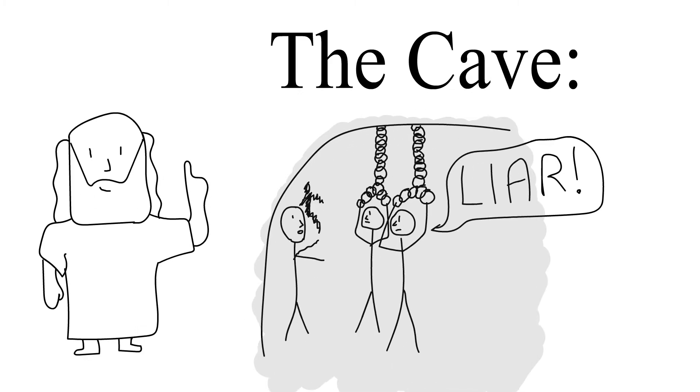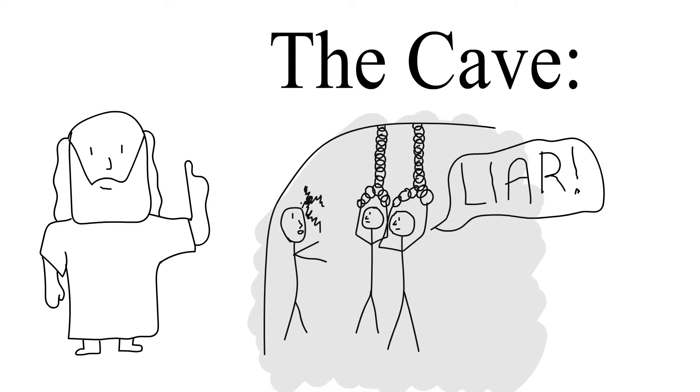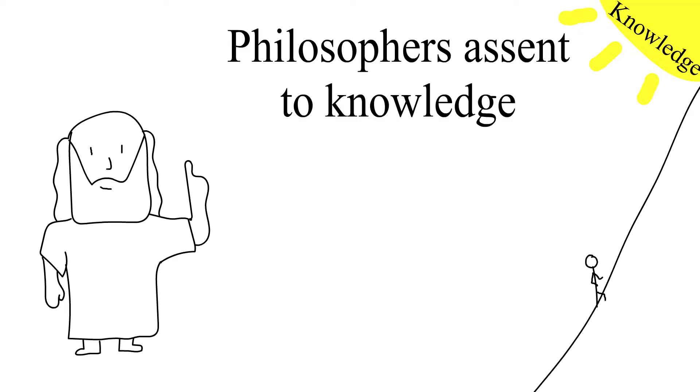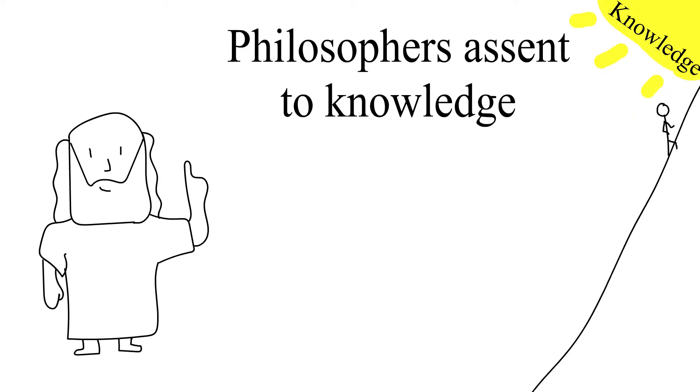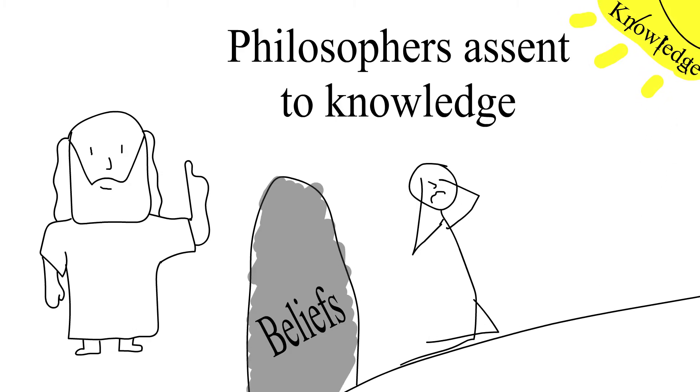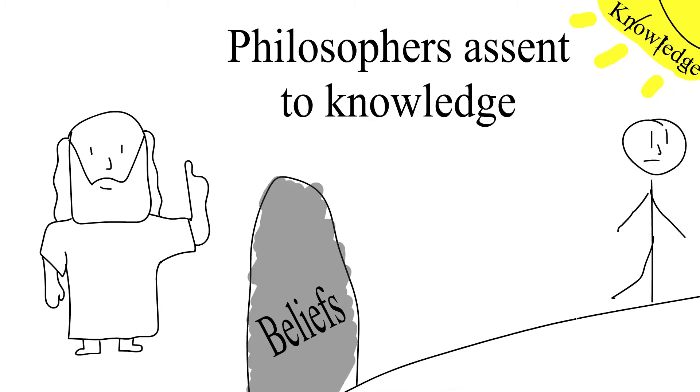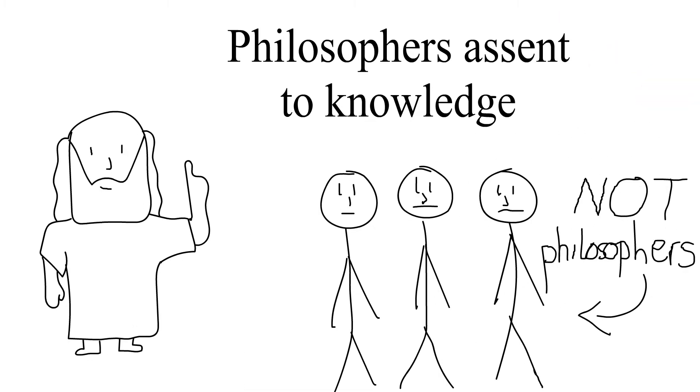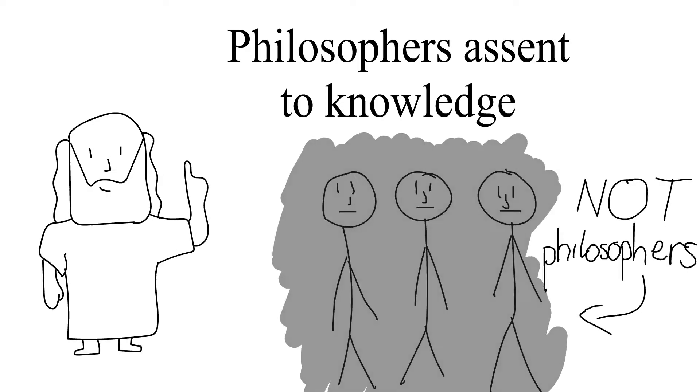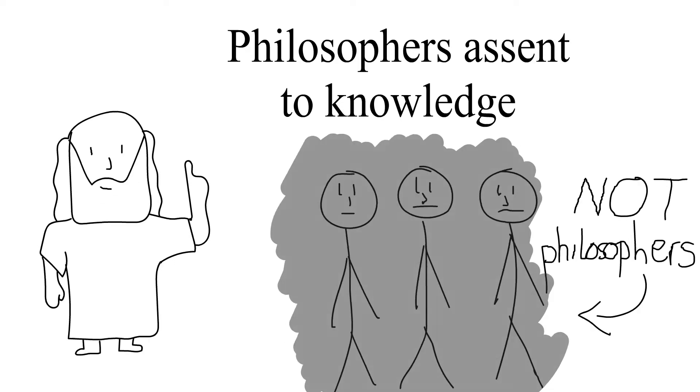It would initially seem obvious that the allegory is an explanation of the philosopher's ascent to knowledge. The escaped prisoner would represent the philosophers leaving the darkness of beliefs which exist in reality and taking the arduous journey to knowledge. Those without philosophy would be left in the darkness of their reality, which merely reflects a small image of the truth and knowledge beyond.